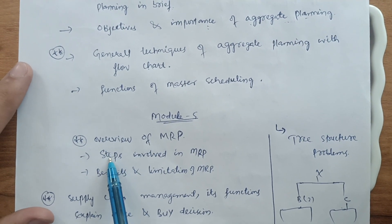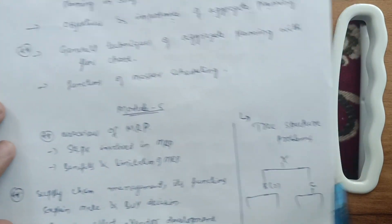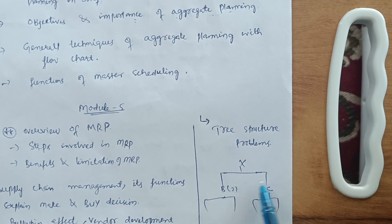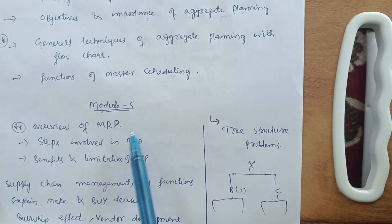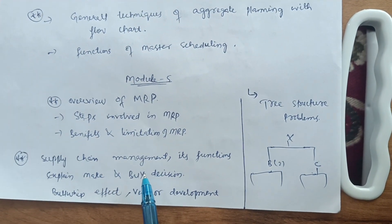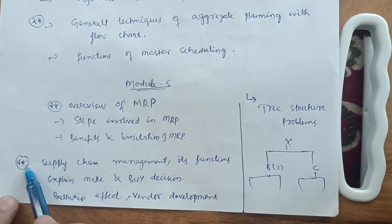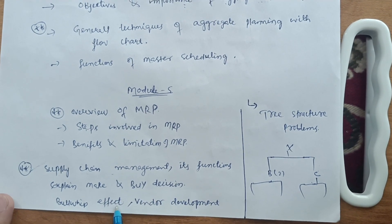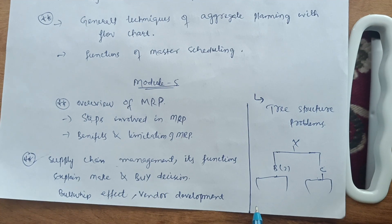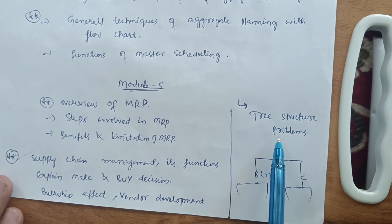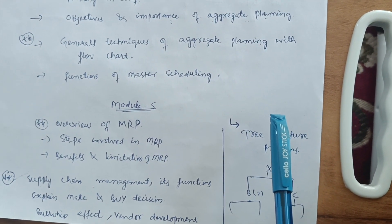In Module 5, focus on the overview of MRP and the steps involved in MRP, along with its benefits and limitations. There are also numerical tree-structure problems in MRP — for example, component X breaks into components B and C, and B further breaks into sub-components. If you are not comfortable with MRP, go for the theory part: what is supply chain management and its functions, make and buy decisions, bullwhip effect, and vendor development. These theory concepts in the alternate part can easily secure 20 marks in Module 5.